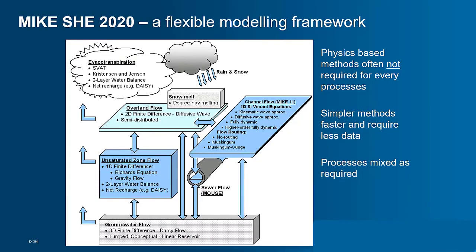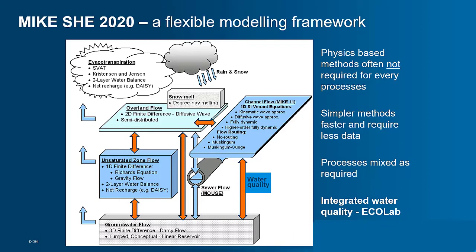Since the 1990s, MIKE SHE has been developed into a much more flexible modeling framework, with a mixture of physics-based methods and simple lumped approaches that can be combined as required. Water quality is now also included in MIKE SHE, but only for the physics-based or finite difference methods using the advection dispersion transport equation. Water quality is included for the overland, unsaturated zone, and saturated zone components, plus stream processes through MIKE Hydro River, and linked with a process-based module, Ecolab.